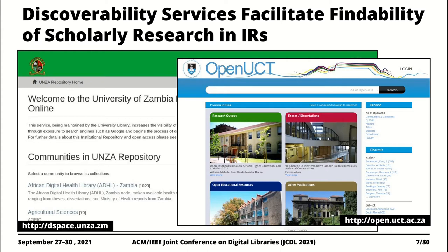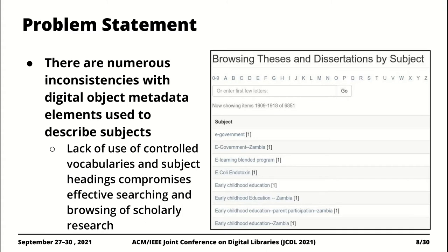Institutional repositories are a type of digital library whose core function is to facilitate archiving of scholarly research output and subsequently facilitate effective access to that content. Due to the exponential growth in scholarly research output, effective discoverability is crucial, and it turns out that metadata — information used to describe scholarly research output — is a crucial ingredient in facilitating effective discoverability of such digital content.